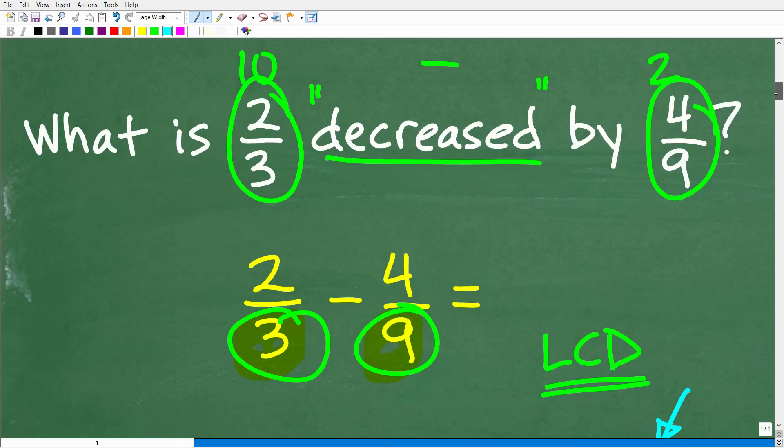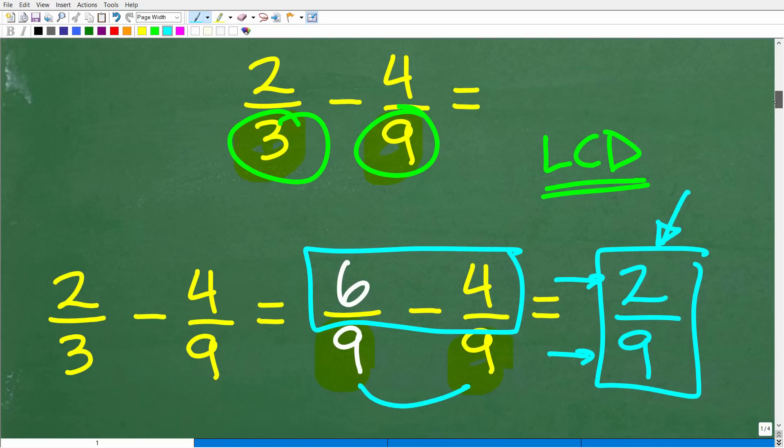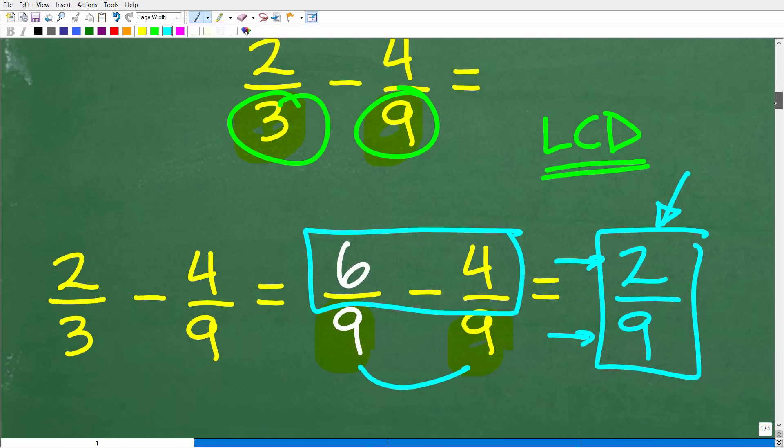So now we have six over nine minus four over nine. And now we can do this problem very easily because all we have to do, because they have the same denominator, is subtract the numerator. So six minus four, of course, is two. So that would be two over nine. And we always look for opportunity to simplify or reduce our fractions here. And we cannot. So that is the answer, two ninths. Okay, so again, going back to the original question, what is two thirds decreased by four ninths? It is, the answer is two ninths.